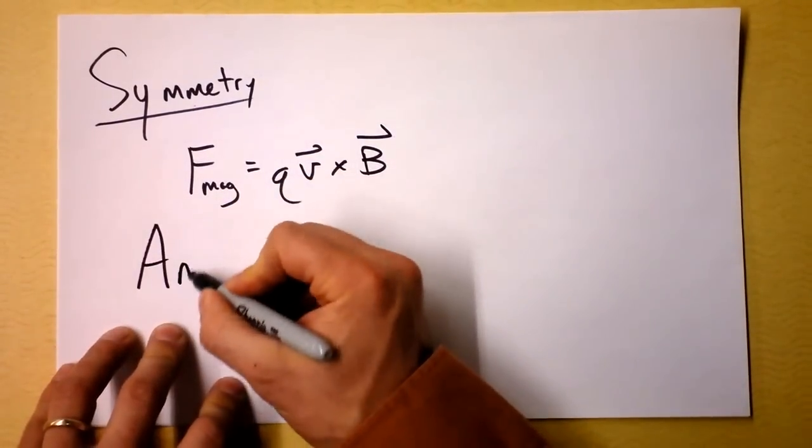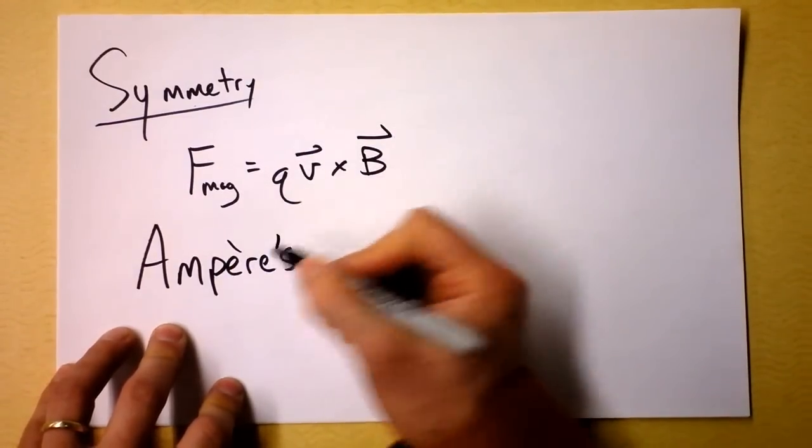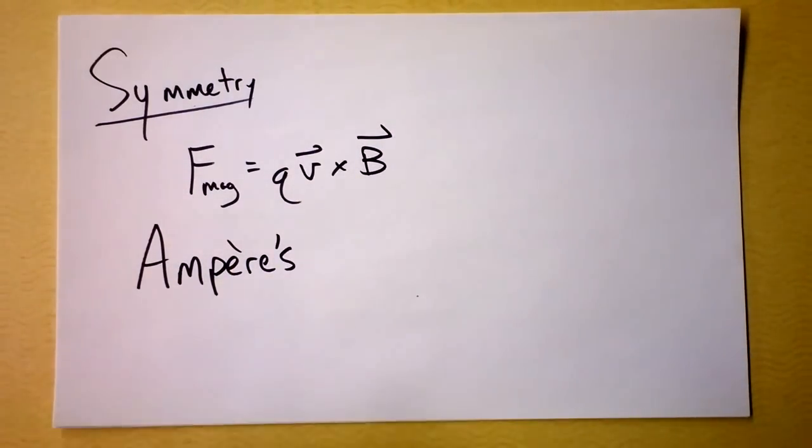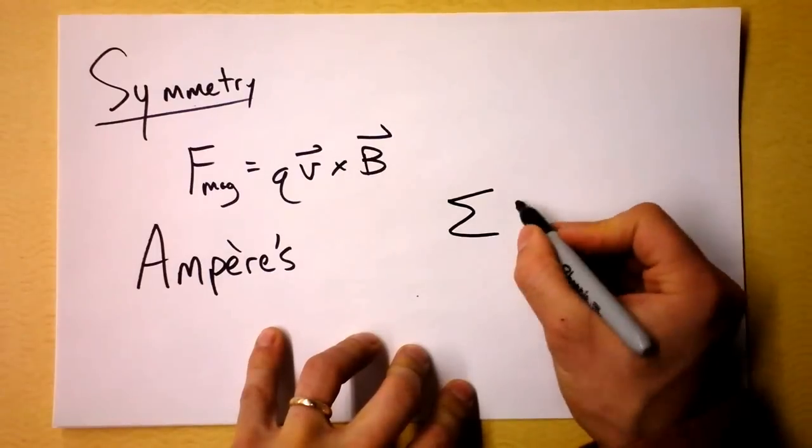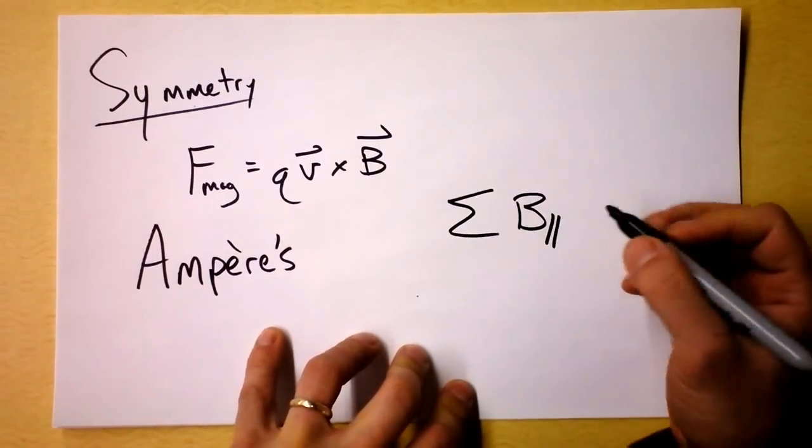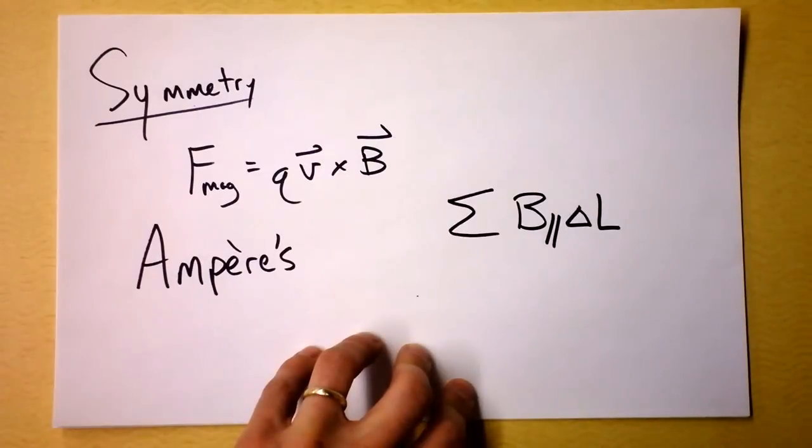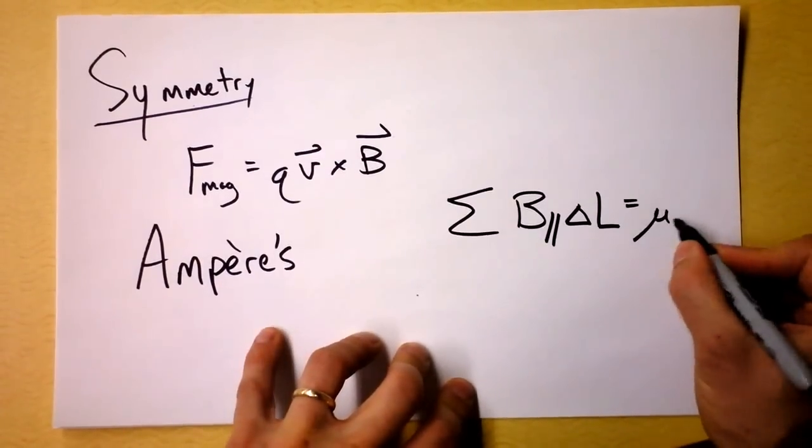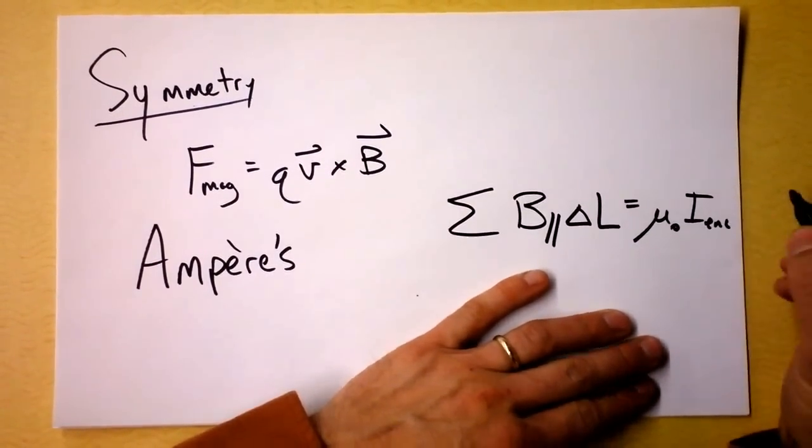And this leads us to Ampere's law. And Ampere managed to figure out, well this is how our book puts it. It's so sissy. Look at this. Our book says, if you add up all of the magnetic fields that are parallel to some length, then you will get this number, mu naught times the current that's enclosed.